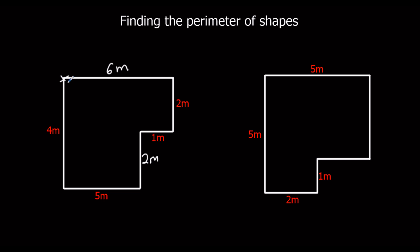And then we're going to go around the edge, so start here and go all the way around. So I've got 6 plus 2 plus 1 plus 2 plus 5 plus 4. 6, 2, 1, 2, 5, 4. 6 plus 2 is 8, and then 1 makes it 9, 10, 11, plus 5 is 16, plus 4 is 20. So 20 meters.